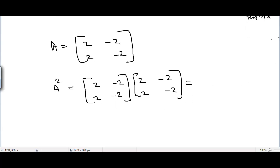For the first row, first column: 2 times 2 is 4 and -2 times 2 is -4, which becomes the first element of the resultant matrix. Then first row, second column: 2 times -2 is -4 and -2 times -2 is +4.